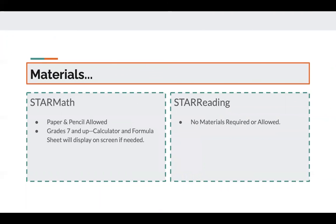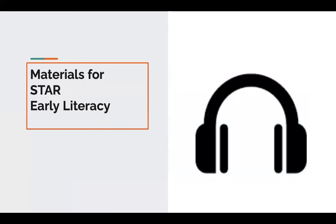When taking any of the reading assessments in STAR 360, no materials are required. When taking the STAR Math Assessment, students should have paper and pencil to work out problems. No calculators are allowed during the assessment. For students in grades 7 and up, if a calculator or a formula sheet is required for a question, they will appear on the computer screen. If a student is taking the STAR Early Literacy Assessment, students will need headphones as the program will talk to the students throughout the assessment.